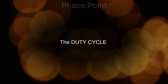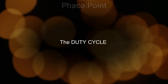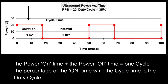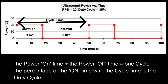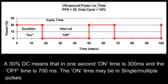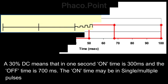To understand intermittent FACO delivery modes like the pulse mode, burst mode, or micropulse mode, we need to understand the duty cycle. The duty cycle consists of an on-time — the duration for which the FACO power is on — and an off-time, the interval in which the FACO power is off. A combination of the on and off time forms one cycle. The percentage of on-time to the entire cycle is known as the duty cycle — for example, one second where the total on-time is 300 milliseconds and the total off-time is 700 milliseconds. This can be delivered as a single pulse or multiple pulses.